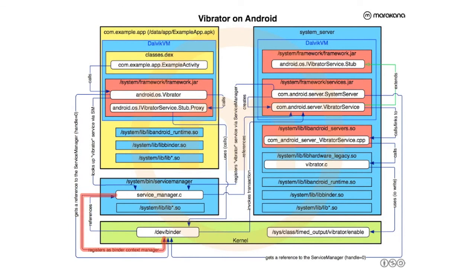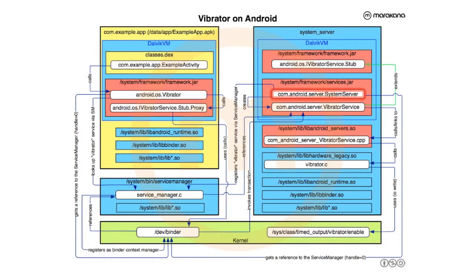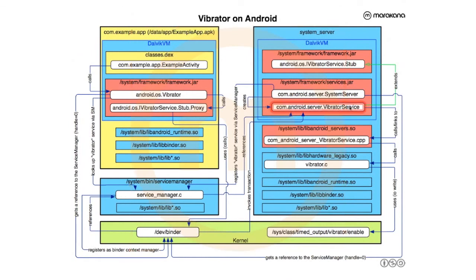The service manager gets launched and becomes available to everyone because it's at that well-known location. After that, Zygote starts up — this pre-baked JVM instance that listens on a Unix socket and forks itself to start your applications. But before it does that, it actually forks itself to start the system server. The system server runs as the system user and has the capability of talking to the service manager. One of the things the system server does is execute the SystemServer Java class, which runs a main method. That main method loads native libraries, registers JNI libraries, and then starts booting services.